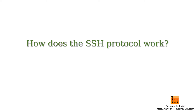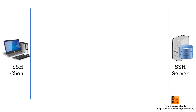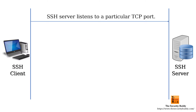How does the SSH protocol work? Let's try to understand that. An SSH server listens to a particular port — it usually uses port 22 to listen to incoming connections. When an SSH client wants to establish an SSH connection with the server, the client first initiates a TCP handshake.